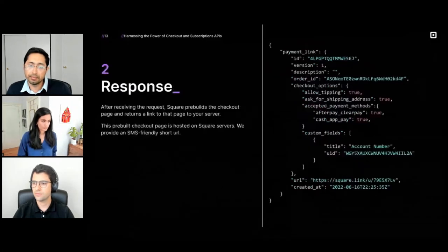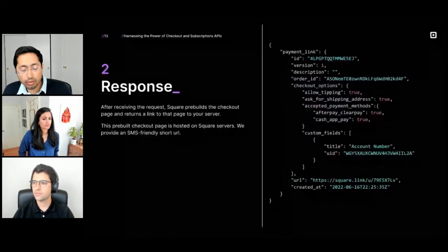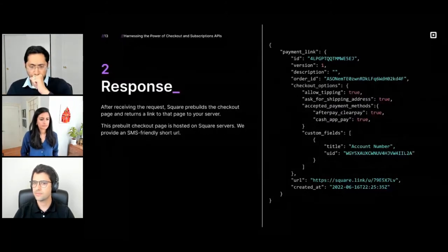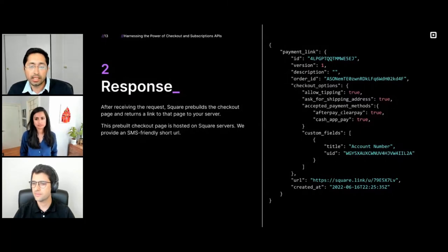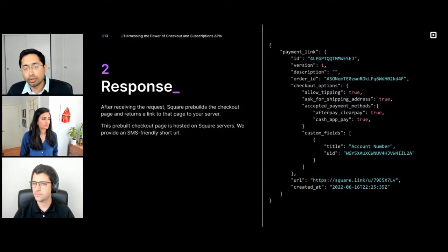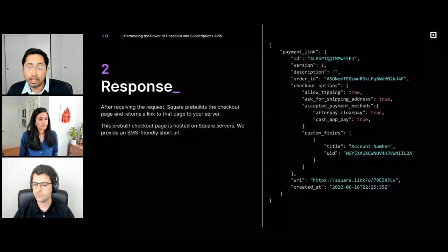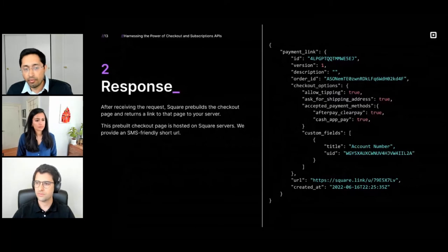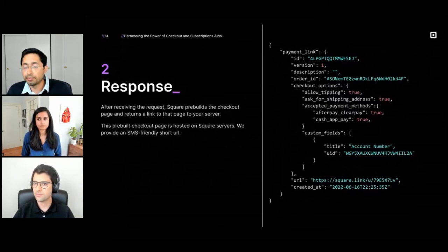Once you've sent us the request, we do a couple of things for you. First, we create a Square order. Next, we create a payment link. And lastly, we send you an SMS-friendly short URL. In the response, we also send you the ID of the Square order that we created. Independently, you can also use Square Webhooks to get notified when a payment is made for that particular order.